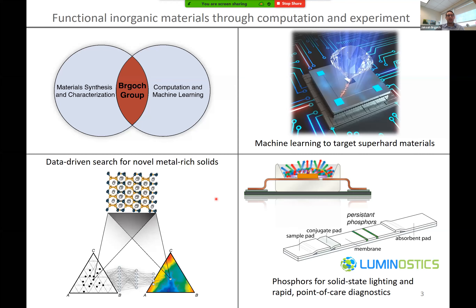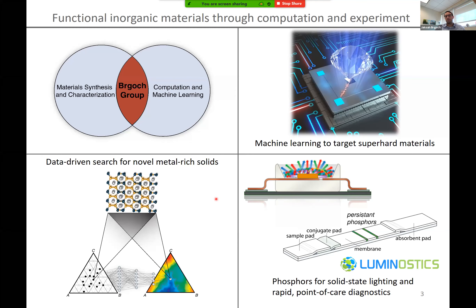We apply this hybrid approach in a number of different research fields. The one you'll hear about today is using machine learning to target new super hard materials. We also have a project using data-driven search and computation to identify novel metal-rich solids. Much of the high-throughput computational work has been made possible by the fact that there are tens of thousands, if not hundreds of thousands, of crystal structures in inorganic crystal structure databases collected over the last 50 to 60 years of research.